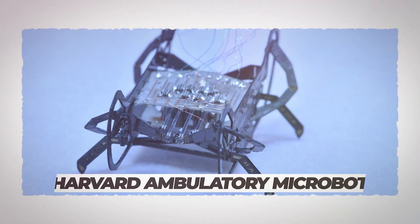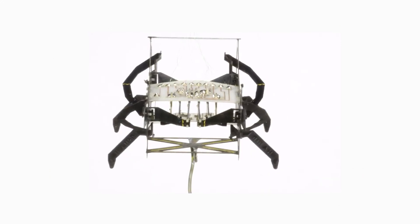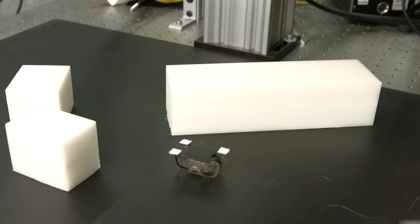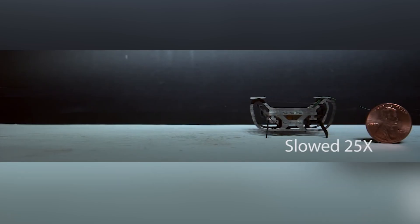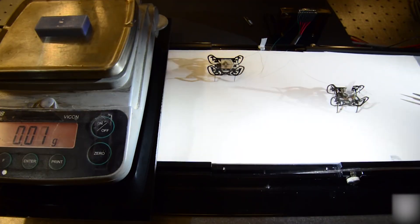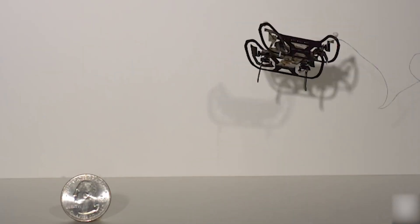Number 7. Harvard Ambulatory Microbot. A cockroach-inspired minibot was developed by the researchers at the Harvard School of Engineering and Applied Sciences. It is almost the size of a penny at about 2.5 centimeters long and weighs 0.3 grams, much lighter than a penny.